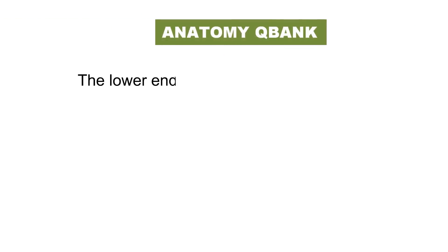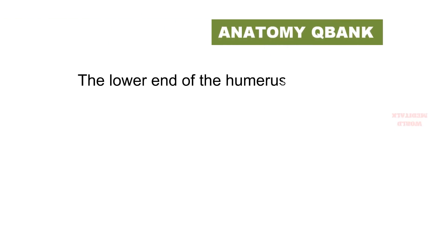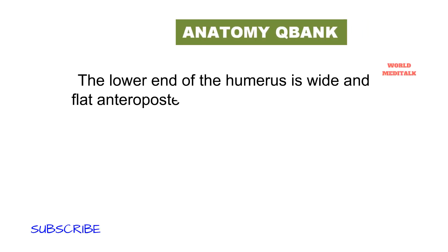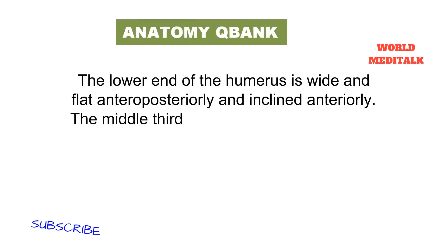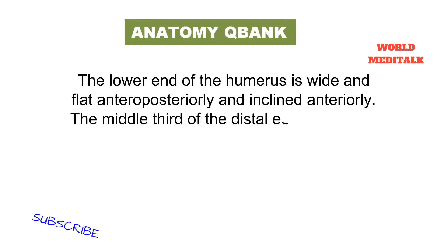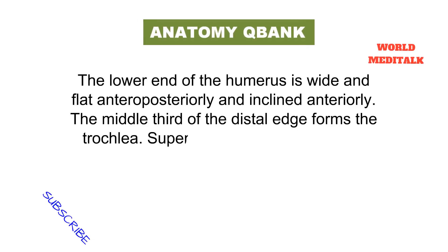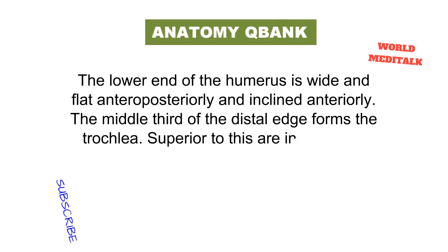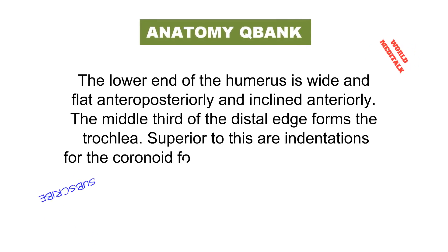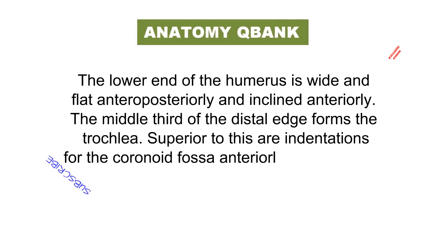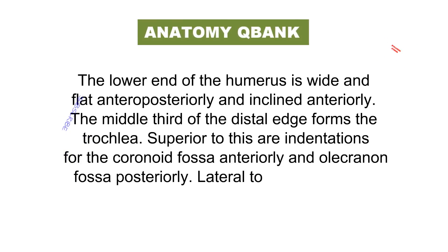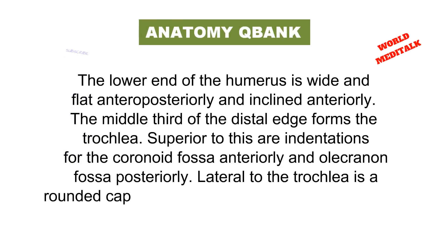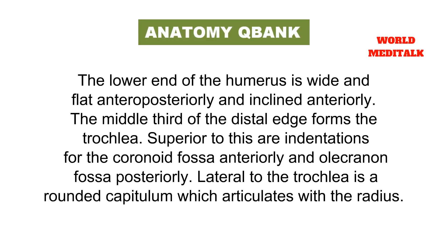The lower end of the humerus is wide, flat anteroposteriorly, and inclined anteriorly. The middle third of the distal edge forms the trochlea. Superior to this are indentations for the coronoid fossa anteriorly and olecranon fossa posteriorly. Lateral to the trochlea is a rounded capitulum, which articulates with the radius.